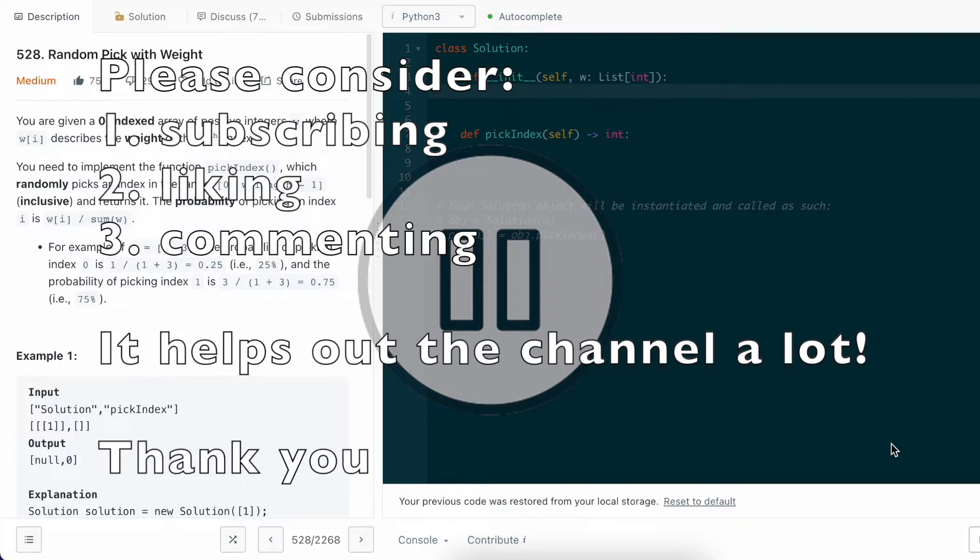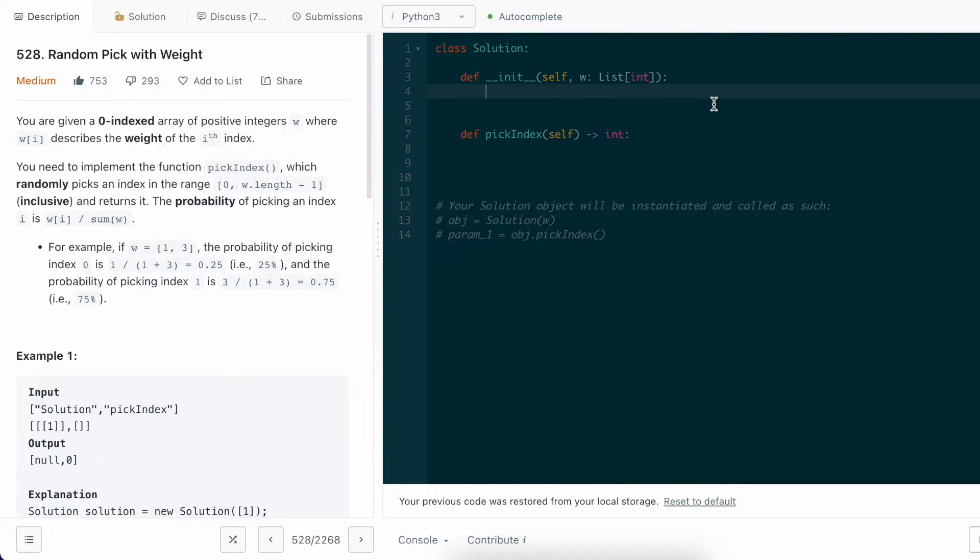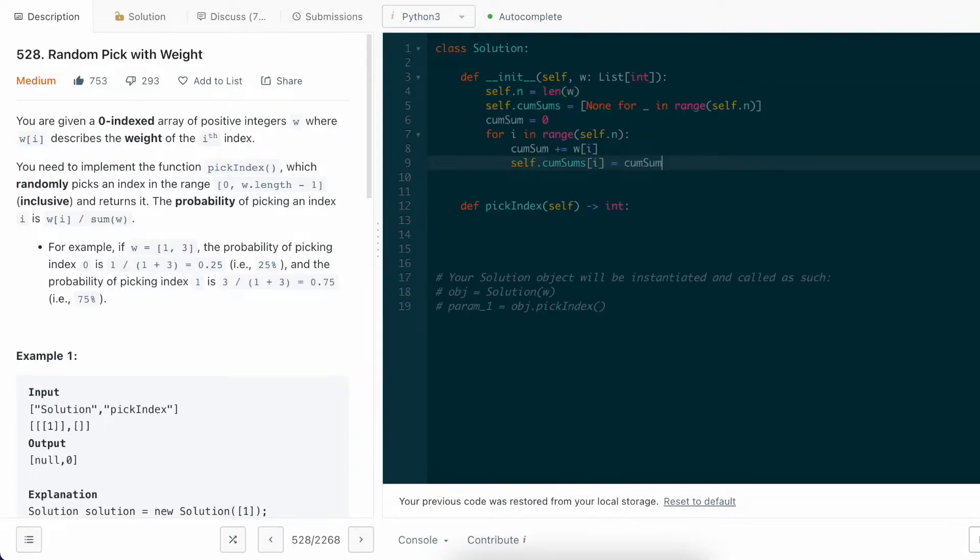Without further ado, let's get into the question. For our solution for cumulative sum range and binary search, we will need three things in our init function. First, the value of the length of w, set as n. Second, an array of cumulative sums for each i index in w. Lastly, the total sum.